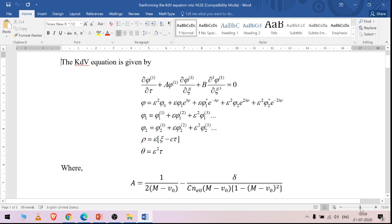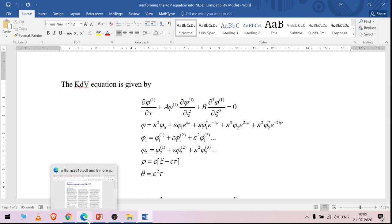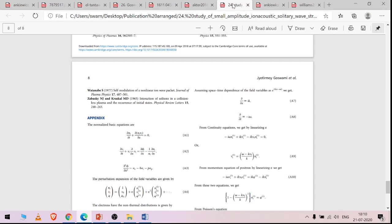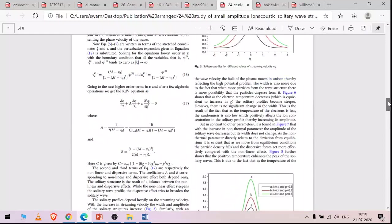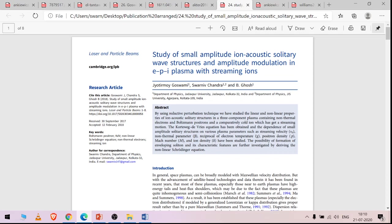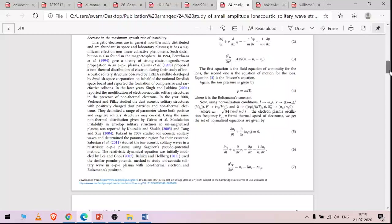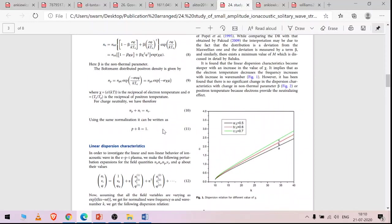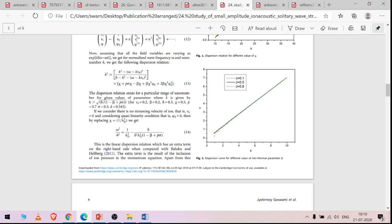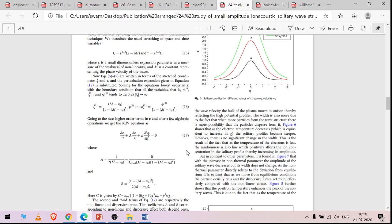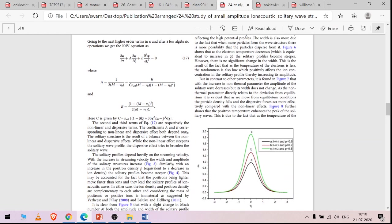Regarding this nonlinear Schrödinger equation, it is one of the interesting equations that we often study in plasma physics. Generally obtaining the nonlinear Schrödinger equation is a bit tricky. And as you can see in one of our articles, we have studied the KdV—this is the study of small amplitude ion acoustic solitary wave structure. We have studied the KdV of ion acoustic waves and amplitude modulation, that is the modulation instabilities, in the electron positron ion plasma with streaming ions.